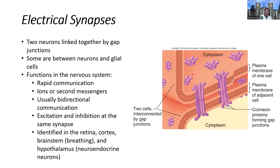Just like with any other synaptic communication, it can be excitation or inhibition happening at the same neuron. Some areas where we find electrical synapses in the body include the retina, the cerebral cortex of the brain, the brainstem — including the medulla — and the hypothalamus. In the hypothalamus, we have lots of neuroendocrine neurons that help to release certain chemical compounds, and the way that these communicate is by electrical synapses only.